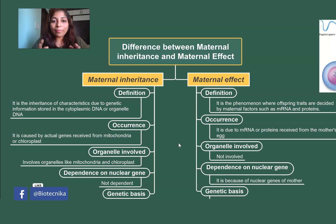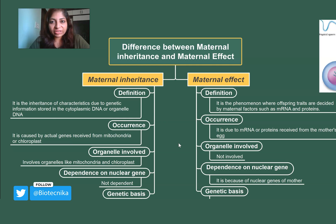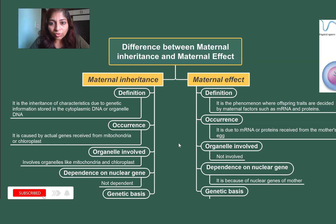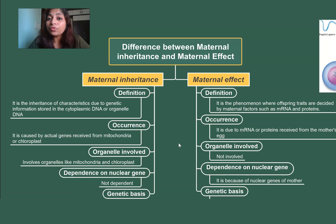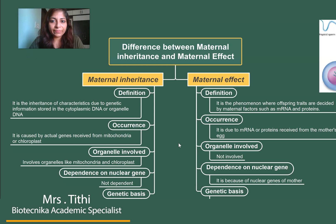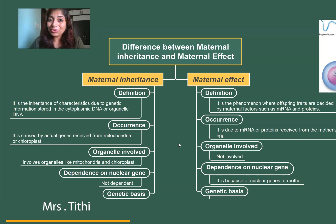I hope this cleared your doubt about these two similar sounding terms. Maternal inheritance is due to the DNA or genes present in the organelle genome like chloroplast and mitochondria, whereas maternal effect is through the mRNA and proteins that the zygote receives directly from the cytoplasm of the egg. Thank you everyone for watching, I'll keep coming with more interesting videos — thank you once again and have a great day.